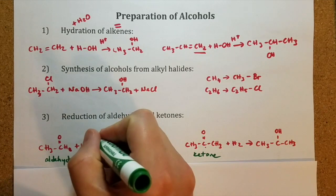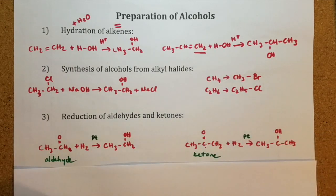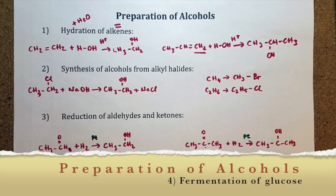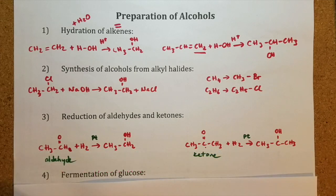In both reactions, platinum is used as a catalyst. The fourth method is a specific one. In first three methods, it was possible to get several different alcohols. However, the last method, fermentation of glucose, use only one alcohol, ethanol.